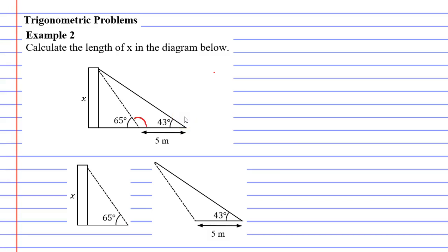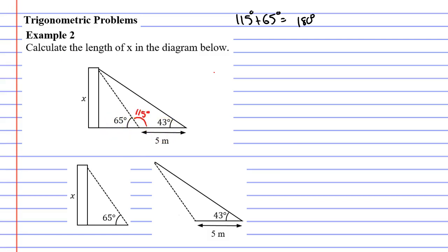I can figure out what this angle is. This angle has to be 115 degrees. Why is that? Well, 115 plus 65 gives me a total angle of 180 degrees. We have a straight line here, so these two angles have to add up to 180 because of the straight line. We'll transfer that information to the triangle below — this is 115 degrees.